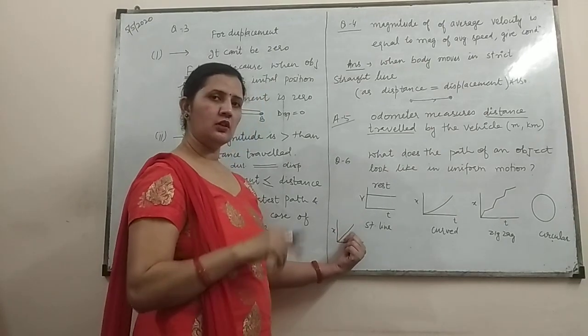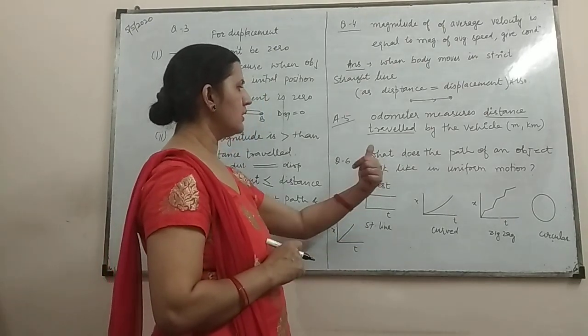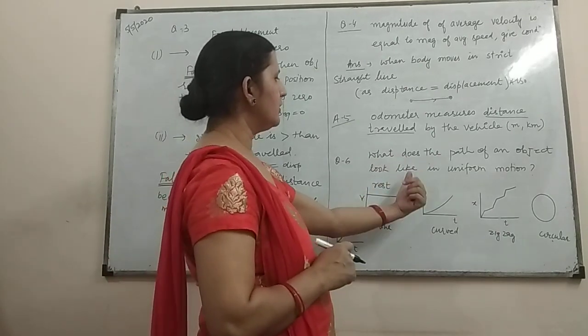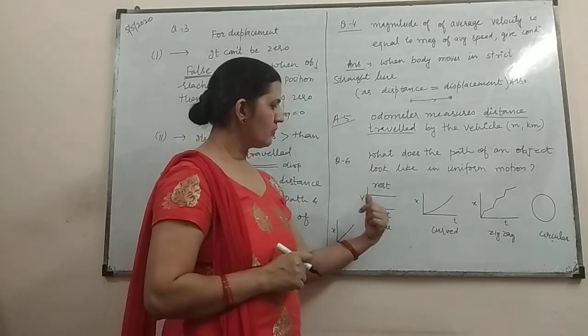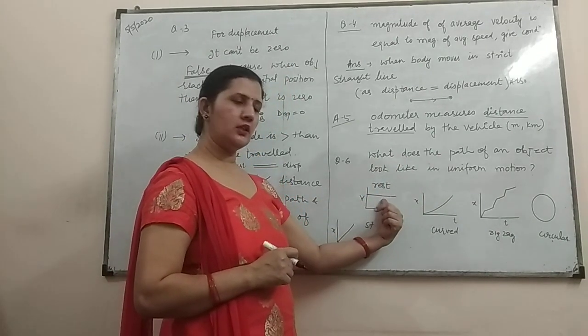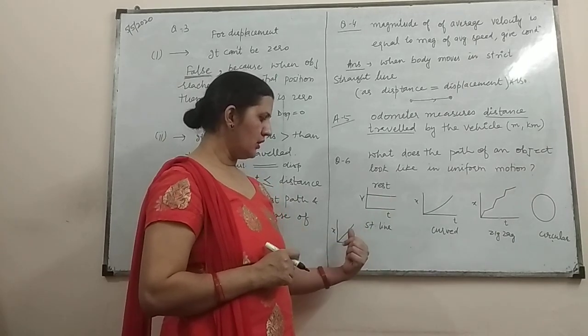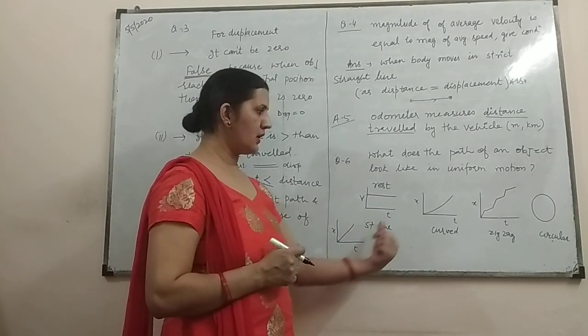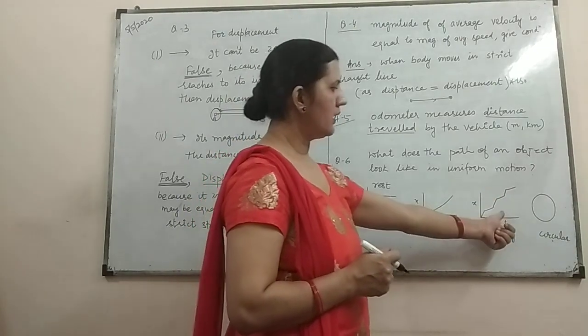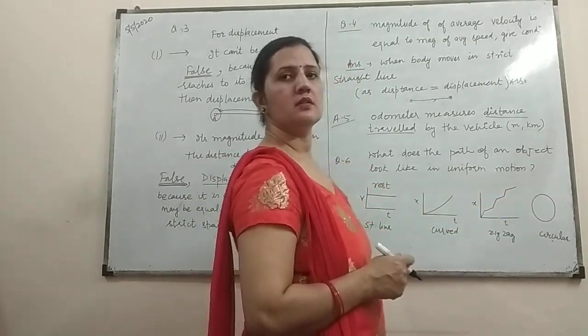So, you can say that the path of the object may be for the v-t graph parallel to the time axis. It is a straight line. For x-t graph, it is again a straight line. It may be a curved line, a zigzag line or a circle.